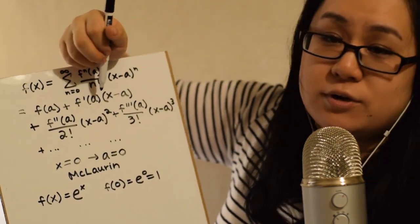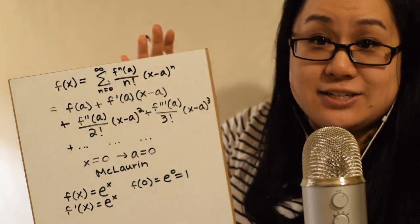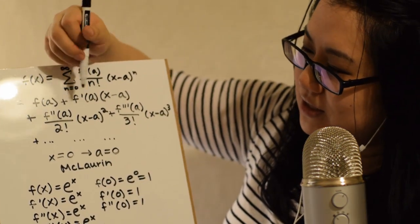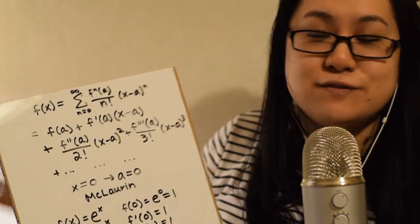Next, f prime of zero: the first derivative of e to the x is also e to the x — that's the special property of e to the x. Which also means f double prime of x is e to the x, and f triple prime of x is also e to the x. So f prime of zero is one, f double prime of zero is one — they all become one, and one times anything is itself, so all those coefficients go away.